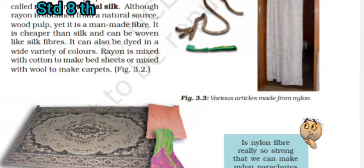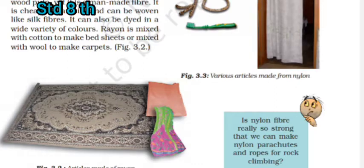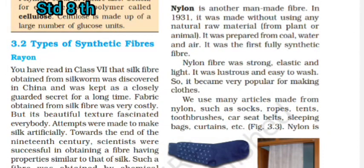Rayon is cheaper than silk and can be woven like silk fibers. It can also be dyed in a wide variety of colors. Rayon is mixed with cotton to make bed sheets, or mixed with wool to make carpets.